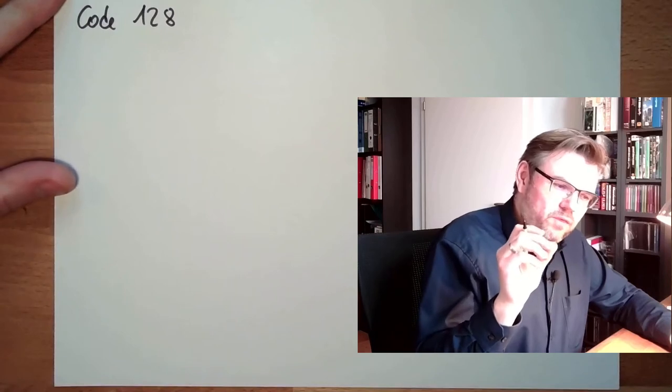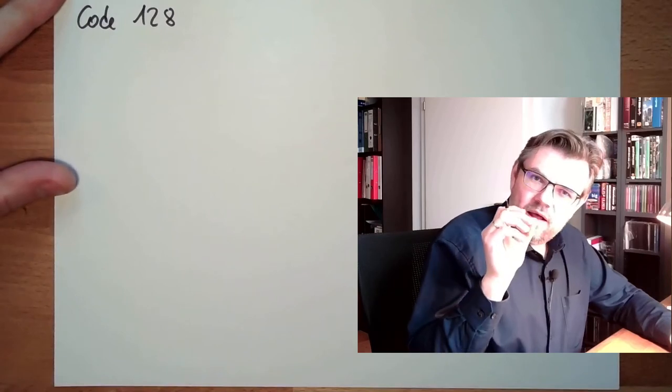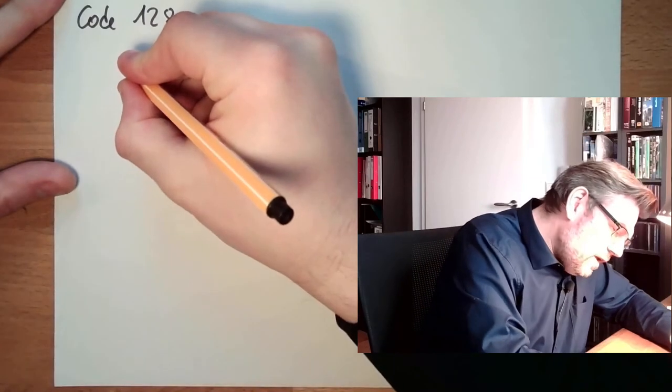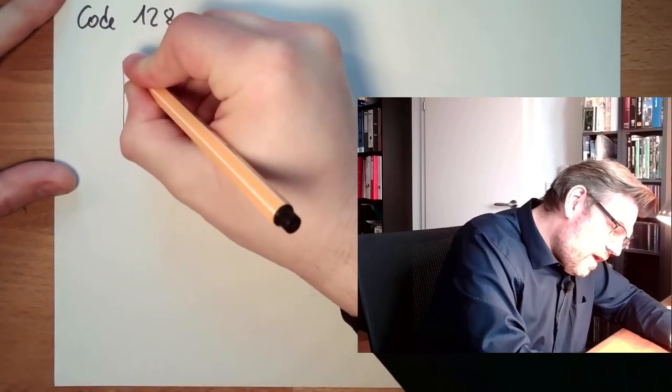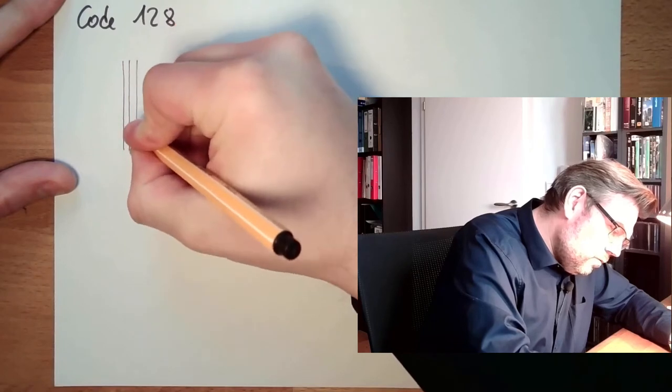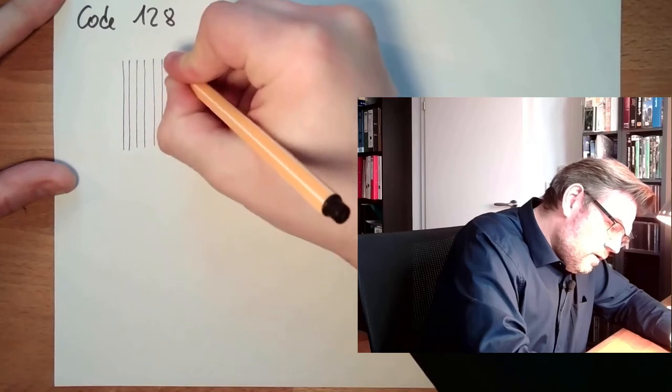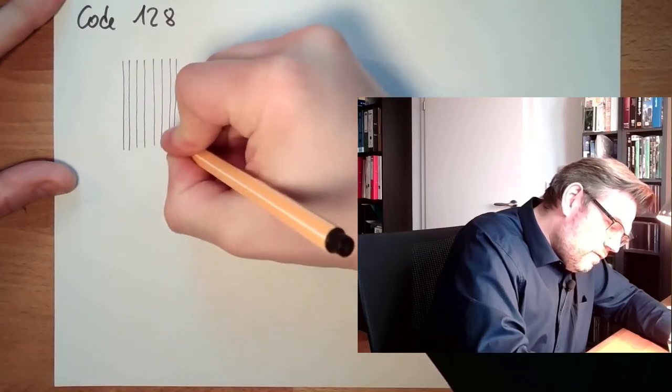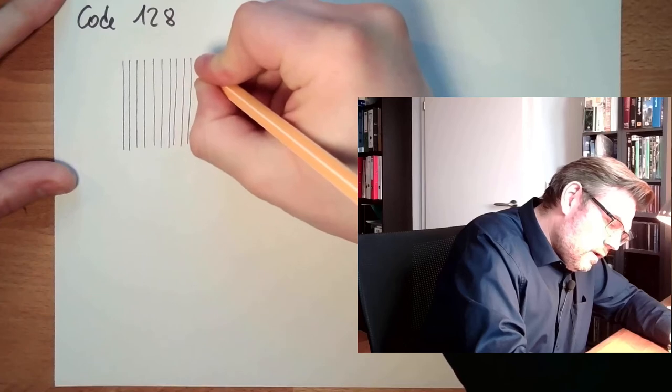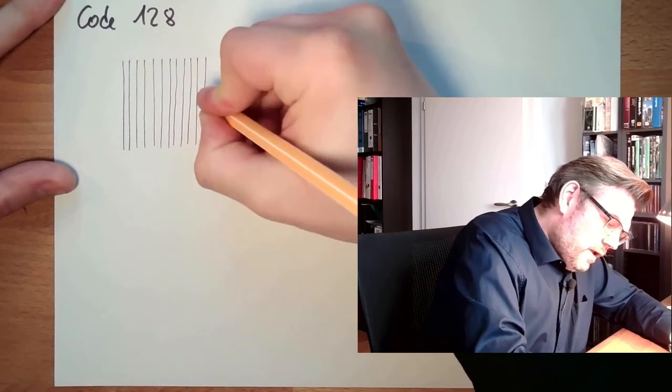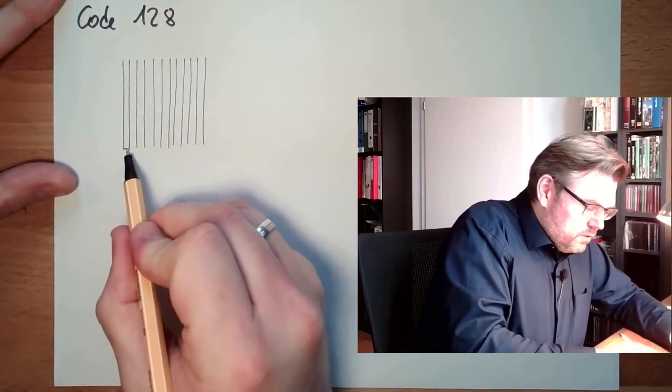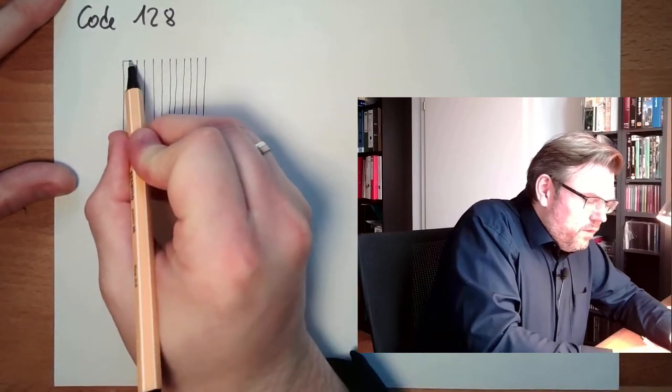So what's up with this Code 128? The base element of this code is the so-called module. A module is the least possible width of a line or a gap. Each sign consists of 11 modules: 1, 2, 3, 4, 5, 6, 7, 8, 9, 10, 11. So we have 11 modules. That's the width of a sign.